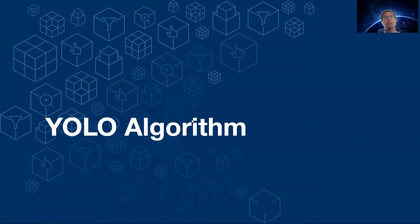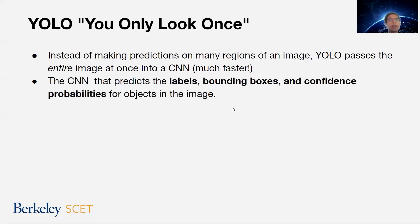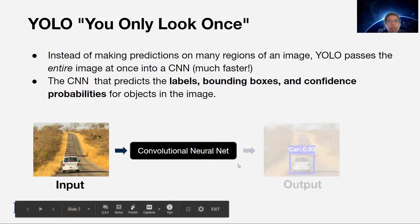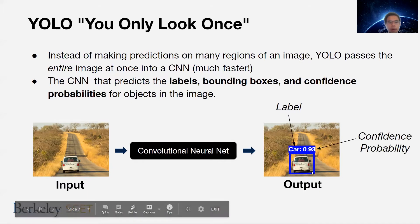Let's talk about the steps of the YOLO algorithm. YOLO stands for 'You Only Look Once' — it can pass a whole image into a convolutional neural net and predict the output in one pass, making it much faster than passing in windows one after the other. The convolutional net is predicting labels, bounding boxes, and confidence probabilities all in one pass. We pass in an image, run it through a convolutional neural net, and it outputs a label, confidence probability, and a bounding box around the object.